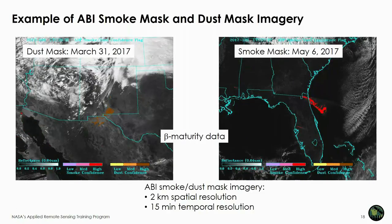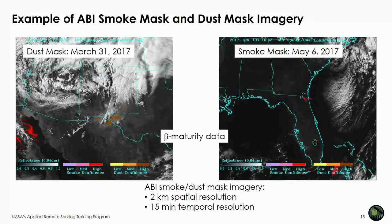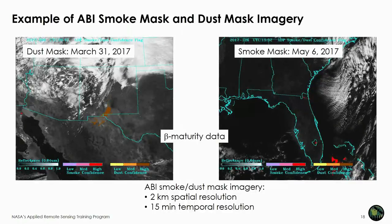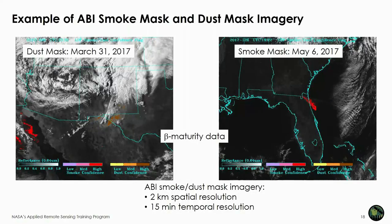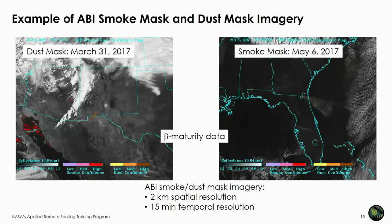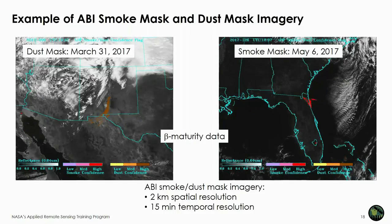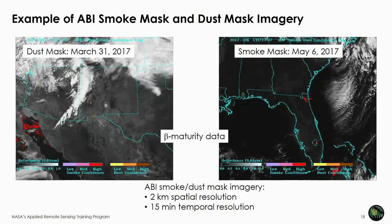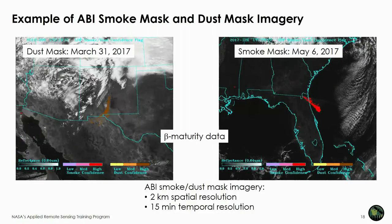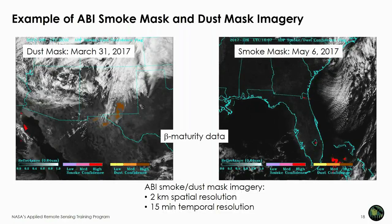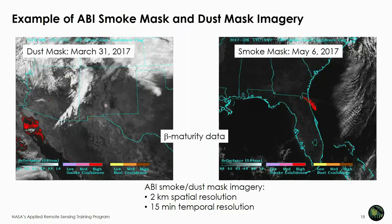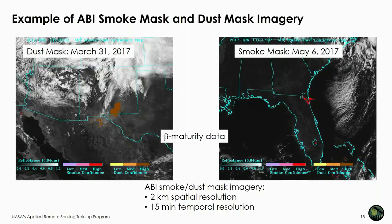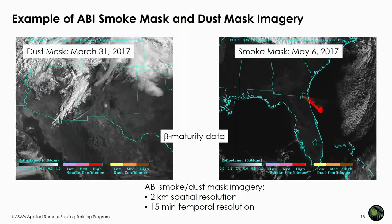Here are examples showing the strength of geostationary satellites — high temporal resolution lets us watch the evolution of events and track plume motion, while higher spatial resolution lets us resolve finer aerosol features. The dust mask on the left shows a dust storm from March 31st, 2017, over New Mexico, moving into Texas and extending down into Northern Mexico. The smoke mask on the right shows the West Mims fire burning along the Georgia-Florida border in May 2017, with smoke extending eastward across Florida and out into the Atlantic Ocean.